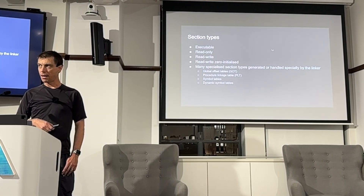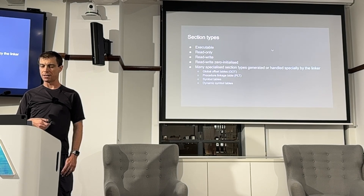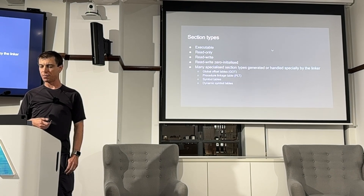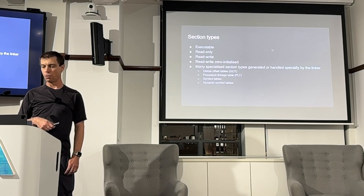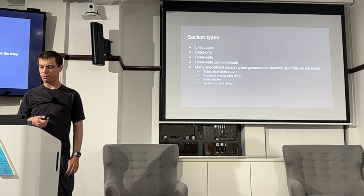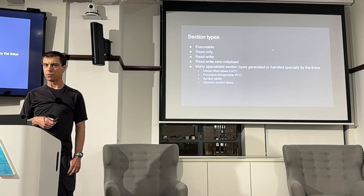The input to the linker is composed of many object files, which are composed of many sections. They contain not only executable code, but also read-only data, read-write data, and read-write zero-initialized data. The last of these doesn't need to take up space in the file, but the linker still needs to lay it out. There are also many specialized section types including the global offset table, which contains pointers to symbols not resolved until runtime, the procedure linkage table, which contains machine code generated by the linker to jump to functions via the global offset table, symbol tables used for debugging and backtraces, and dynamic symbol tables used for looking up symbols at runtime with shared objects.